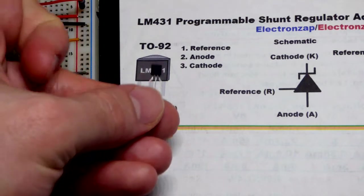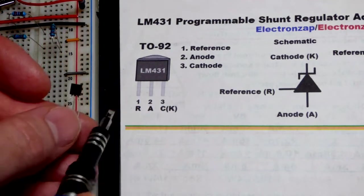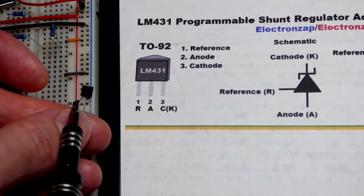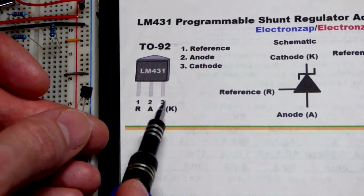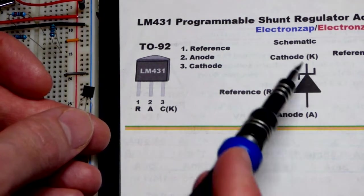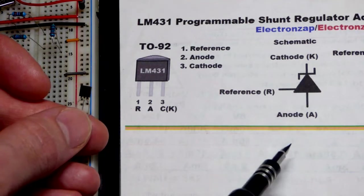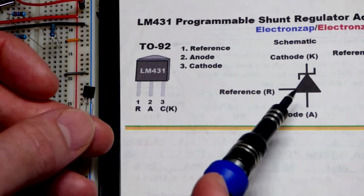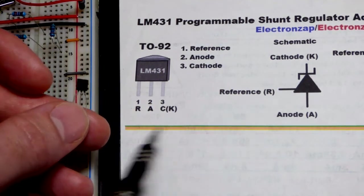This is a TO-92 package as you can see there and we got the pins. Pin number one is the reference pin, that's the pin on the left. Pin number two is the anode and pin number three is the cathode. The cathode usually goes towards the positive side of the circuit, anode to the negative, like a zener diode. They even got the Z on the schematic and then we have our reference.